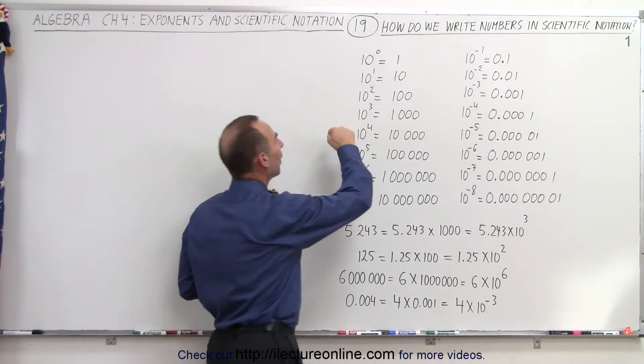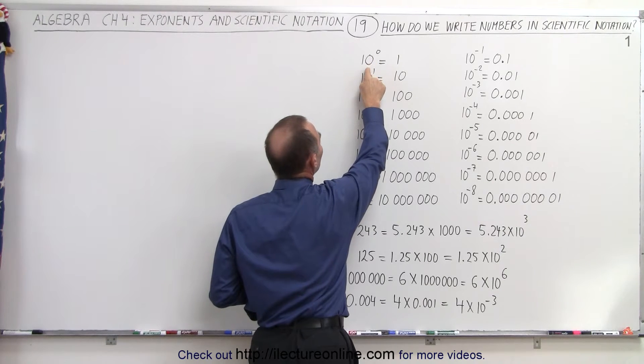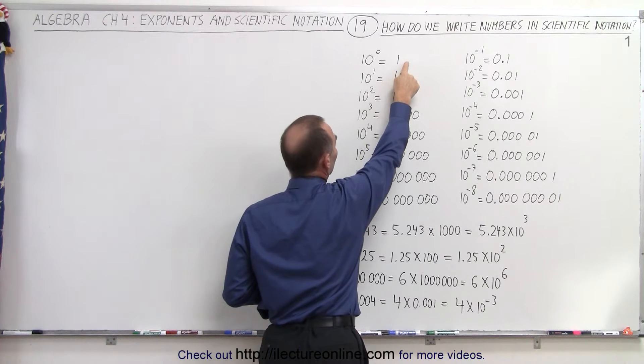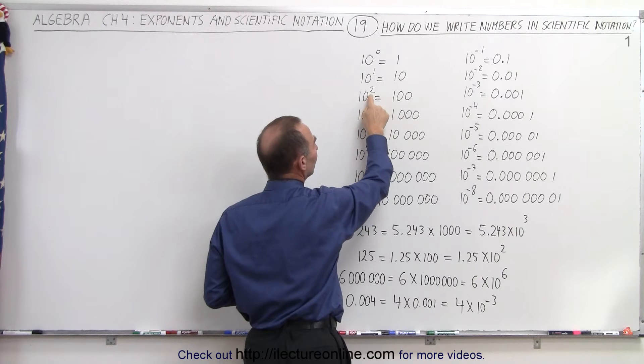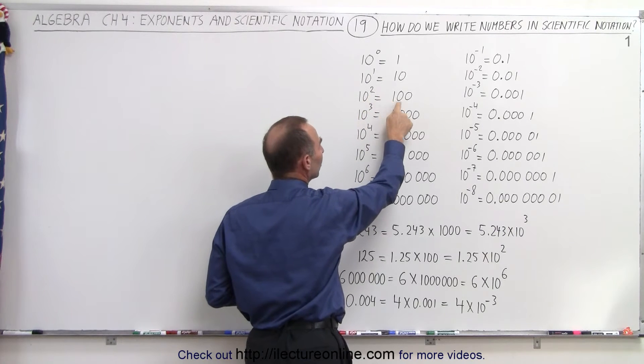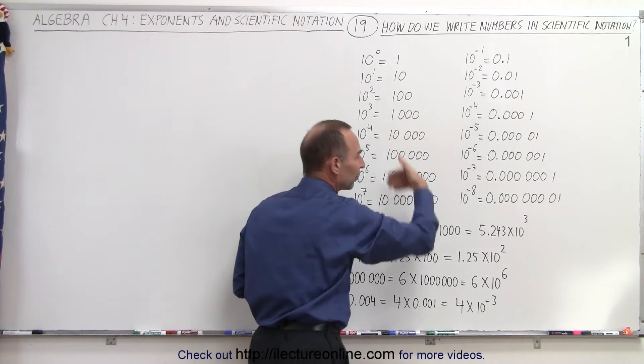If the exponent is 0 or positive, notice the exponent represents the number of zeros. For example, 10 to the 0 power means 1 with 0 zeros. 10 to the 1st power represents 1 with 1 zero. 10 to the 2nd power represents 1 with 2 zeros. 10 to the 3rd power represents 1 with 3 zeros and so forth.